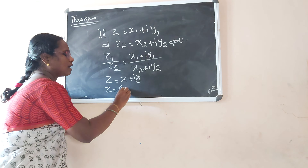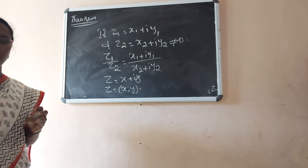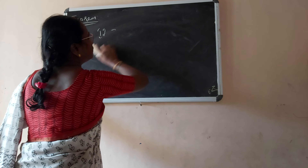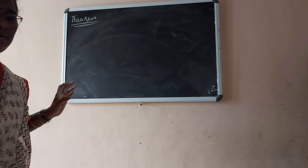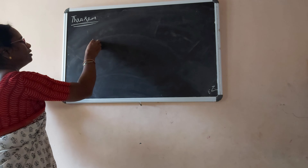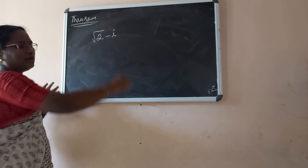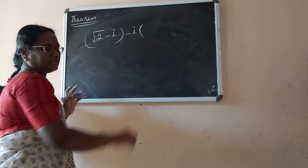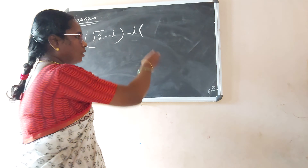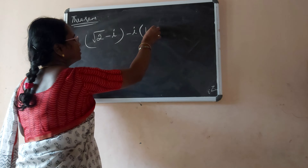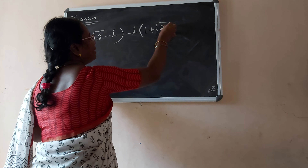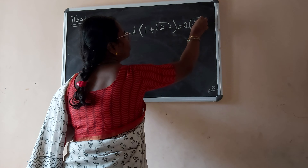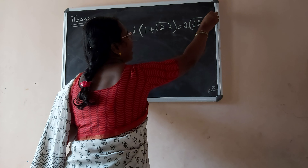It is important to note that there is no order structure in complex numbers. Therefore, we cannot compare any two complex numbers.